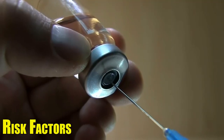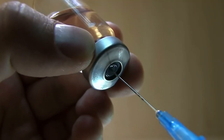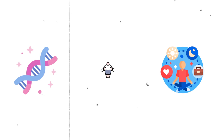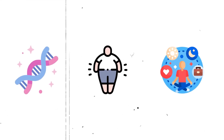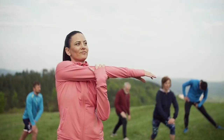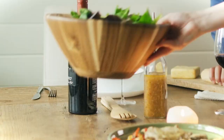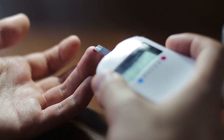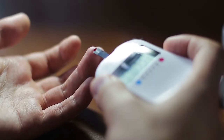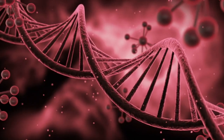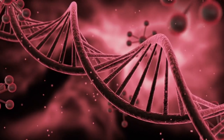Risk factors for type 2 diabetes include genetics, lifestyle choices, and obesity. Adopting a healthy lifestyle, including regular exercise and a balanced diet, can significantly reduce the risk of type 2 diabetes.